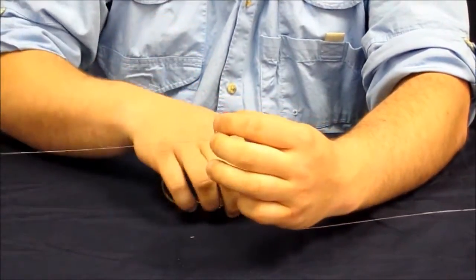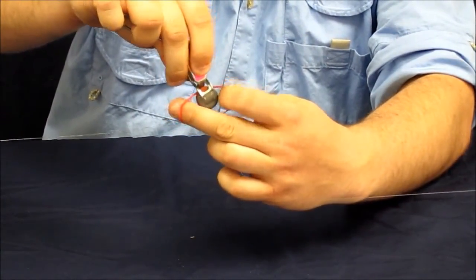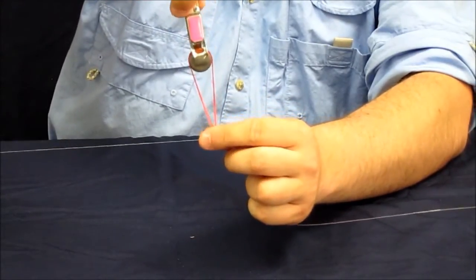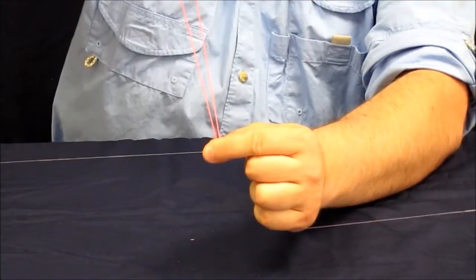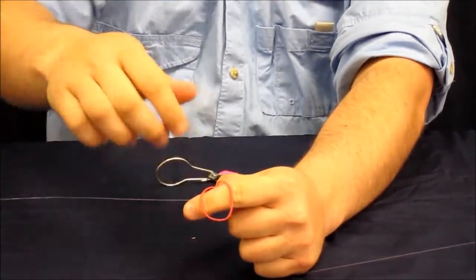You will then attach the planer board release like so. Try to get it three quarters of the way back into the back of the pad like this here. When a fish strikes the rubber band will stretch, either the rubber band will break or snap out the upper band if you want to.